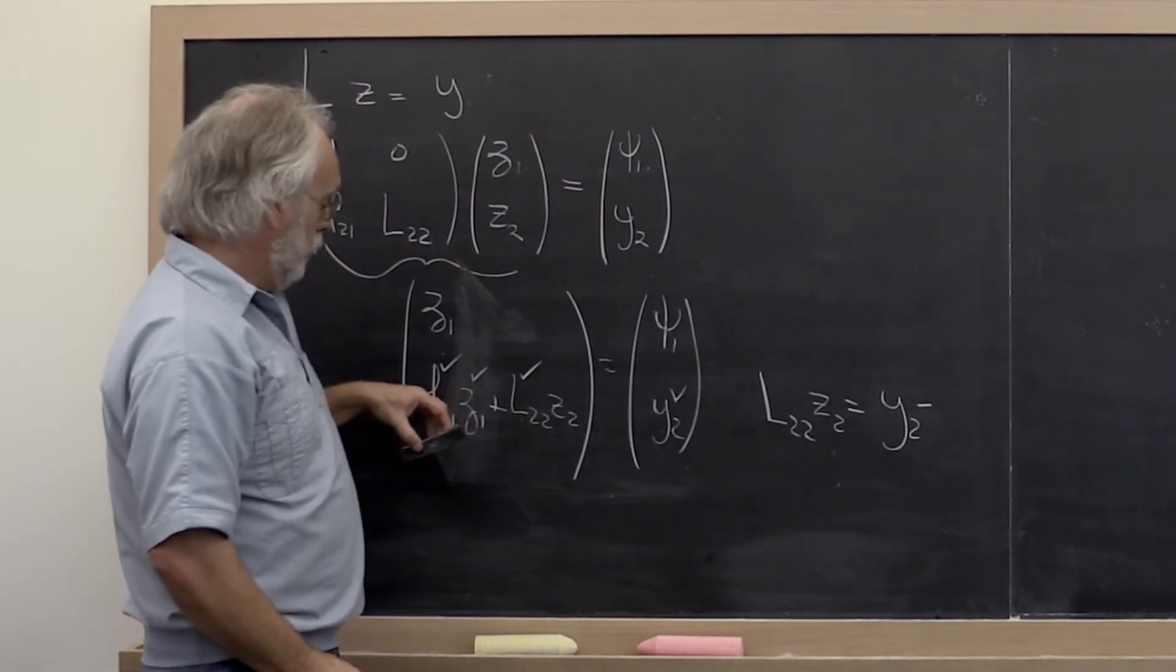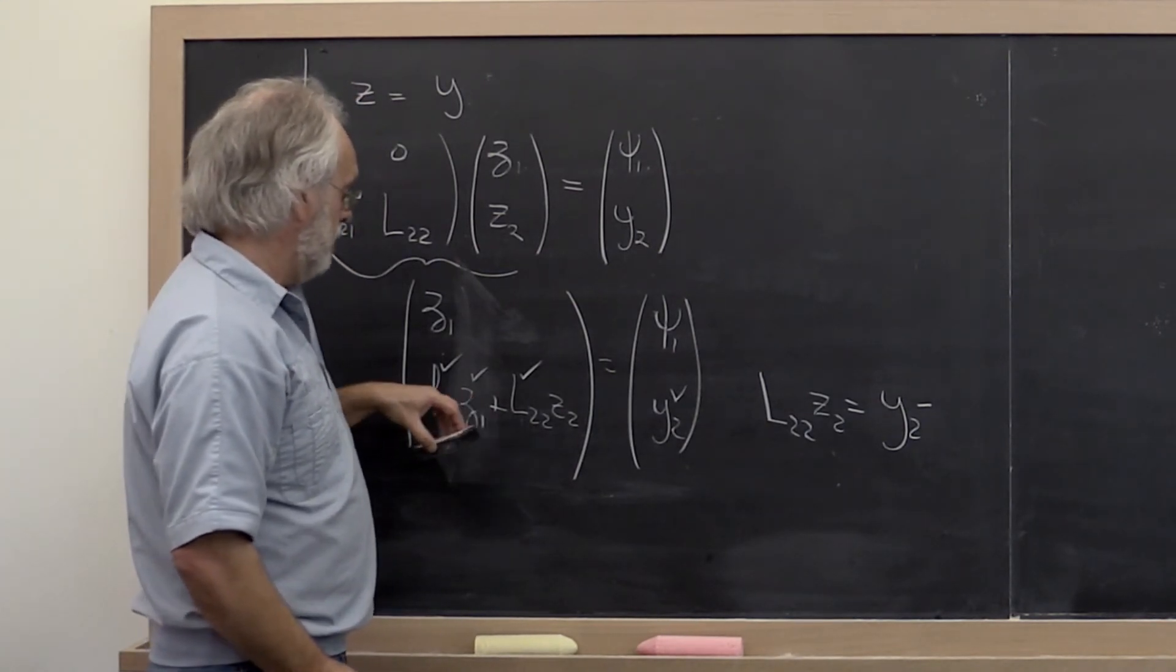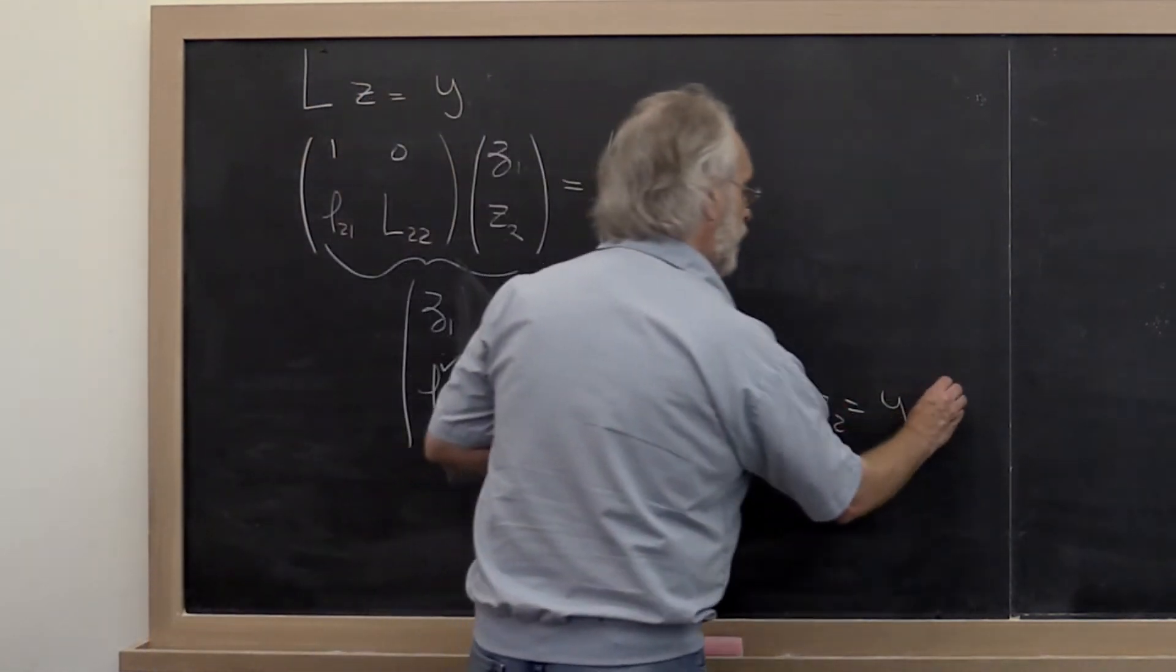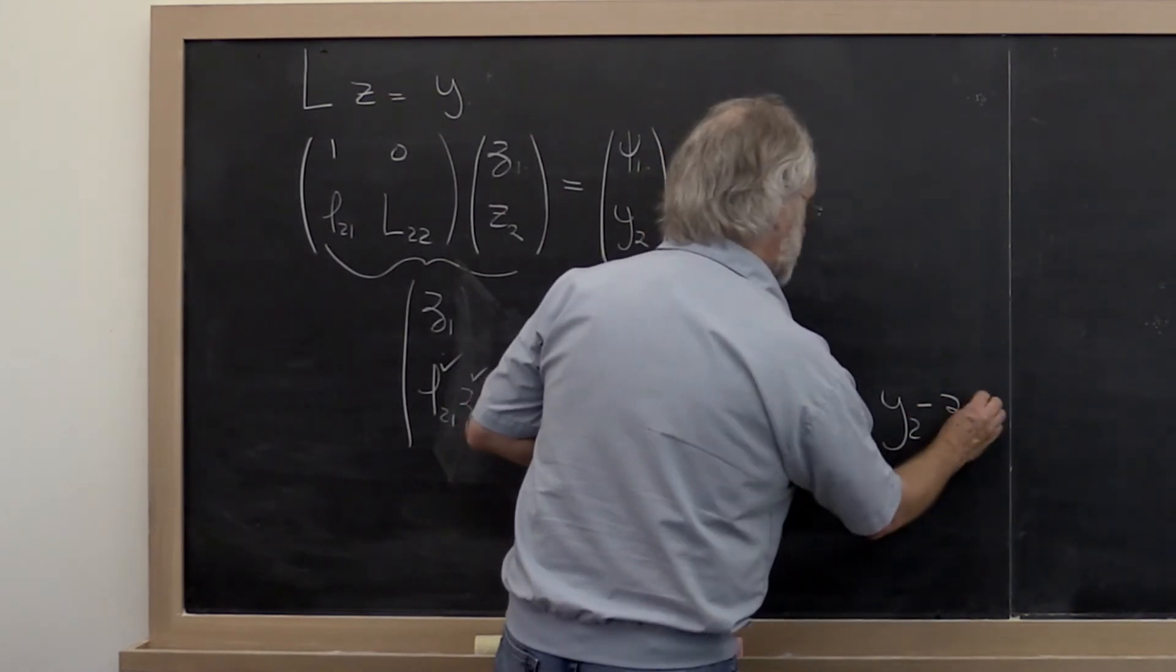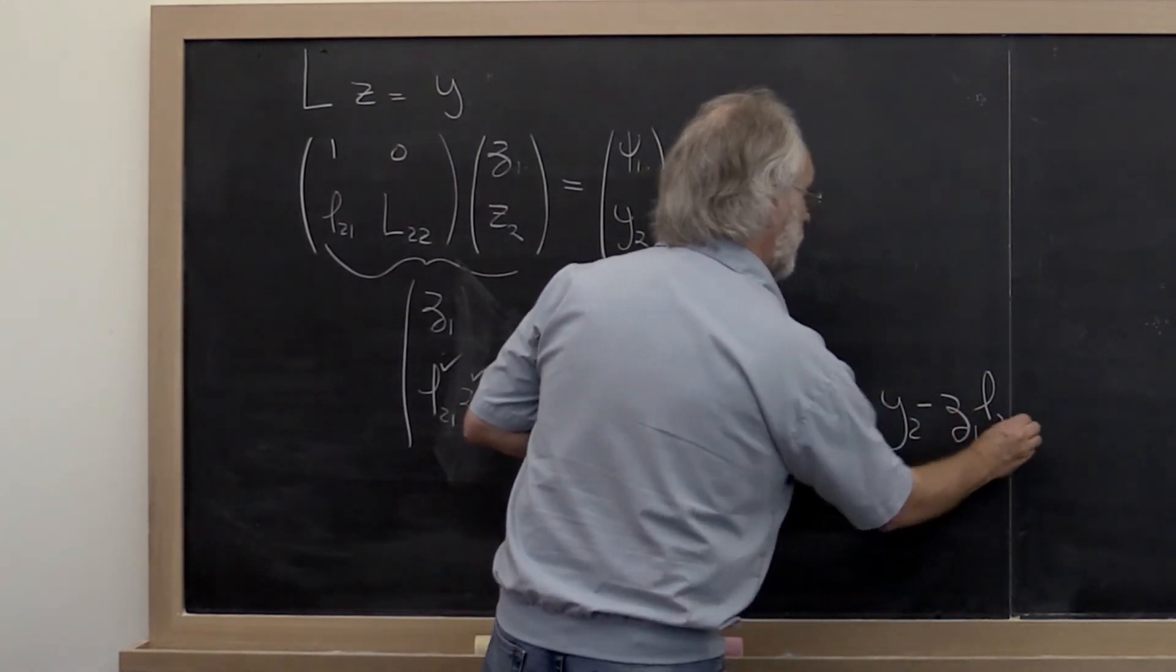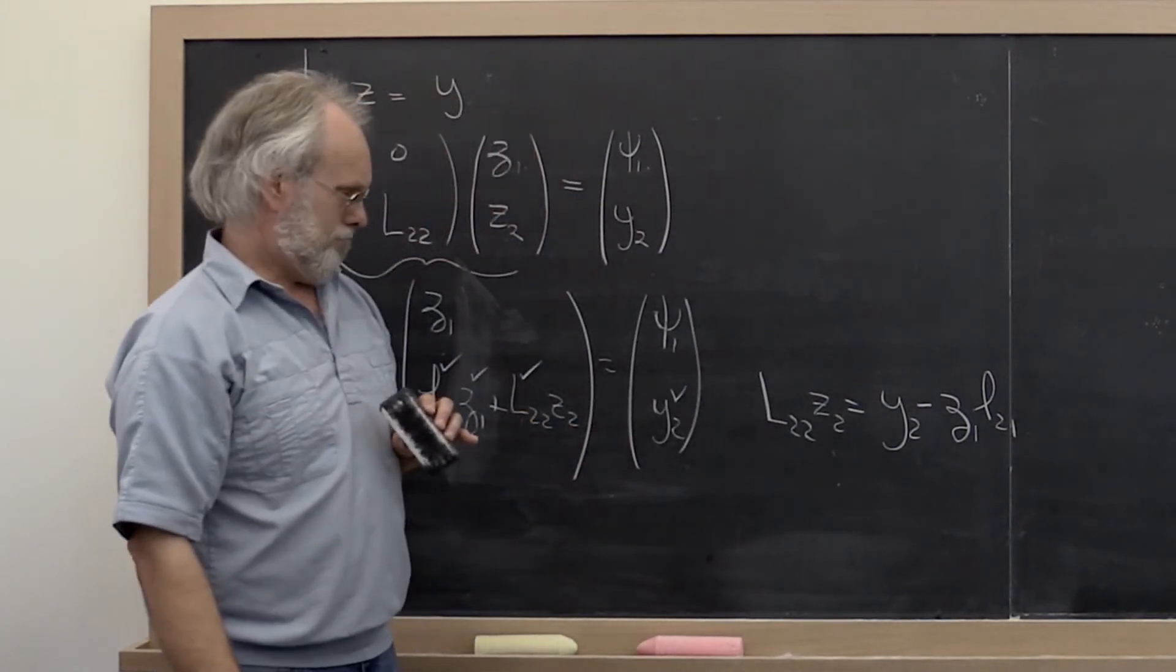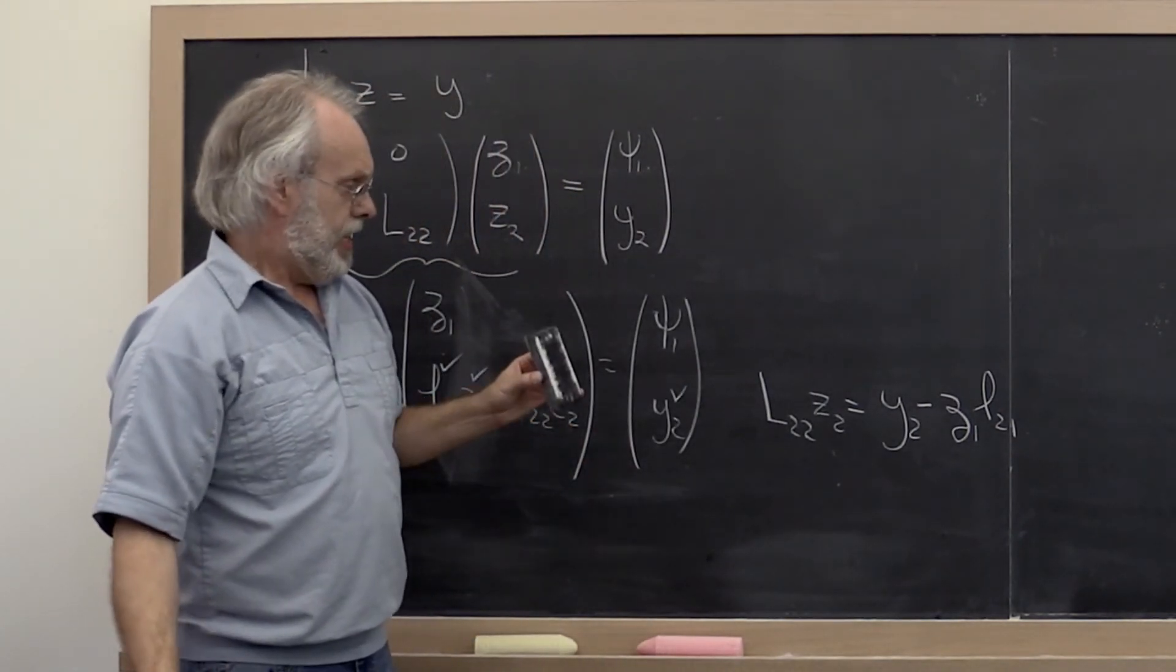And notice that we can do the vector times the scalar times the vector. We prefer to think of this as a scalar zeta_1 times the vector L21. And then what?